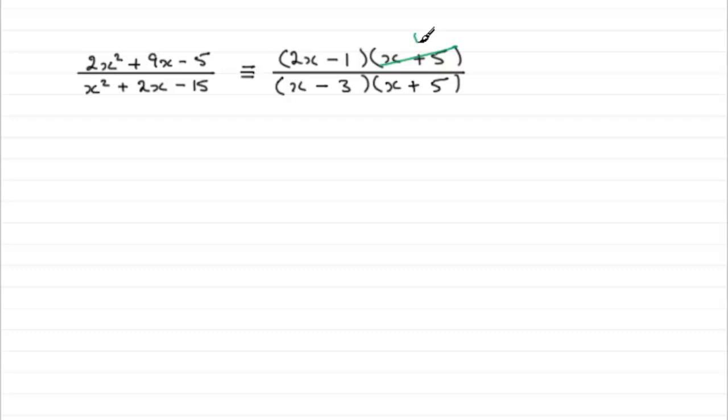So the x plus 5 is a common factor, cancel it out like that, and then underneath just put that it's identical then to 2x minus 1, all divided by x minus 3. And there you have it.